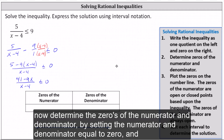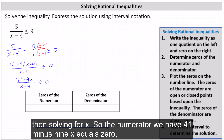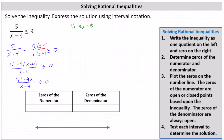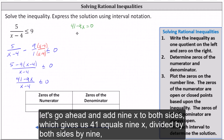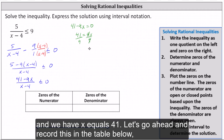Step two: we determine the zeros of the numerator and denominator by setting each equal to zero and solving for x. For the numerator, we have 41 minus nine x equals zero. Adding nine x to both sides gives us 41 equals nine x. Dividing both sides by nine, we get x equals 41 ninths.